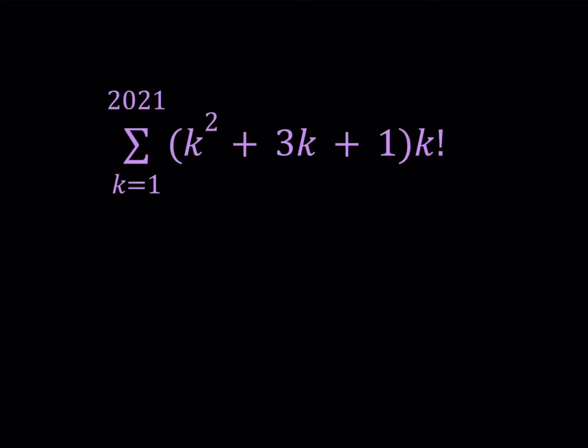Hello, everyone. In this video, we're going to be evaluating a sum. This is the last problem of 2021, so I thought maybe we would use 2021 in this problem. So we have the quantity k squared plus 3k plus 1 multiplied by k factorial, and this sum is taken over k equals 1 through 2021.